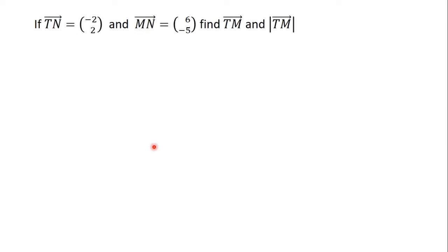Let's consider the second question for this video. Vector TN is equal to negative 2, 2 and vector MN is equal to 6, negative 5. Find vector TM and the magnitude of vector TM.